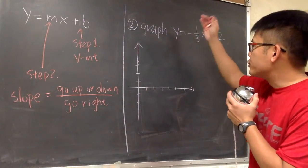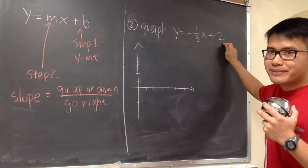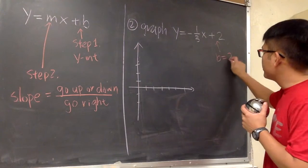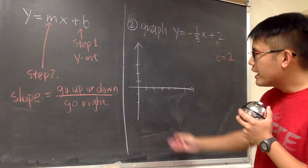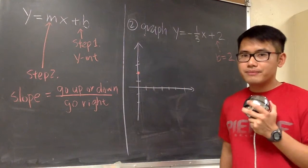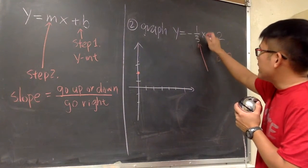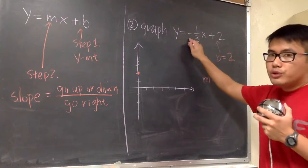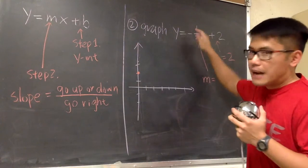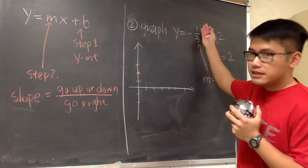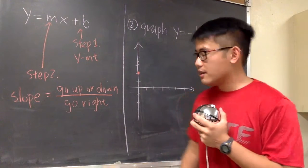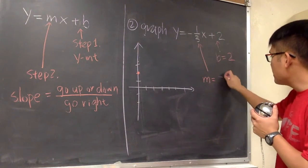For the second example, we're going to graph y is equal to negative 1 over 3x plus 2. It's still in y equals mx plus b form, so we begin with the b value — b is positive 2. We go to the y-axis and put a point at positive 2. Then we look at the slope. The slope is the number in front of x, so m is negative 1 over 3. Always put the negative on the top for consistency — so we write it as negative 1 over 3.